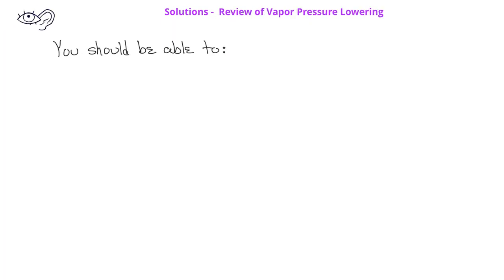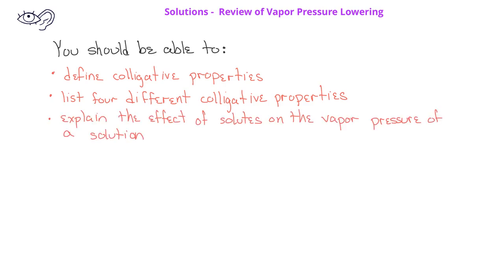After watching this video, you should be able to define what a colligative property is. You should be able to identify four different colligative properties. You should be able to explain what happens to the vapor pressure of a solution compared to the vapor pressure of a pure solvent. And you should also be able to use Raoult's law to quantitatively determine the vapor pressure lowering of a solution.